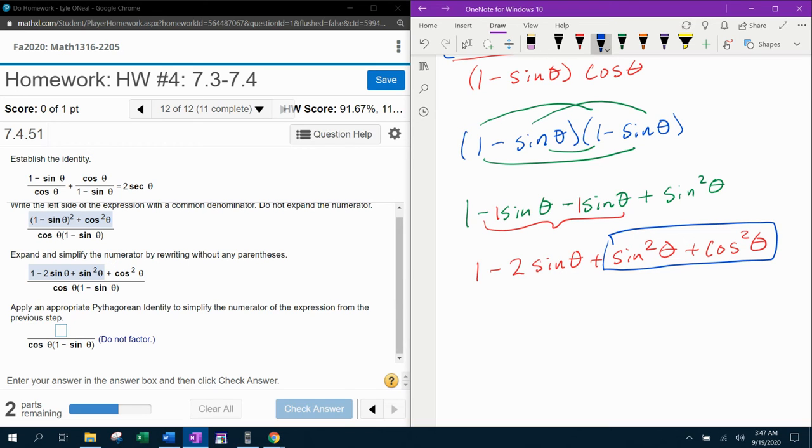I want to draw your attention to this part right here. That is a Pythagorean identity. Sine squared theta plus cosine squared theta is equal to one. So all of that can be replaced with one. And then if I bring down the other two terms, that's going to be one minus two sine theta. This is a plus one.